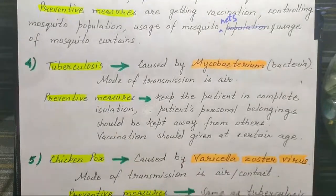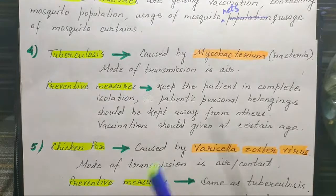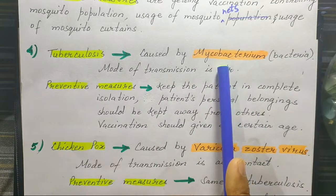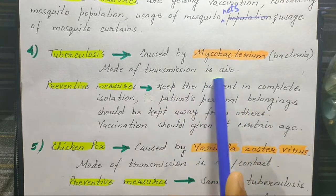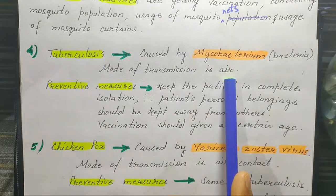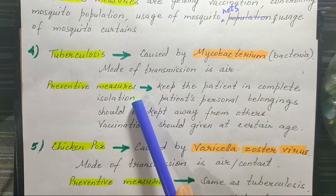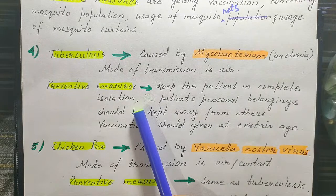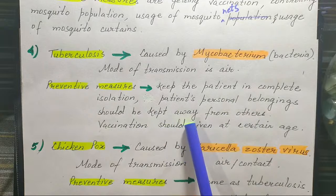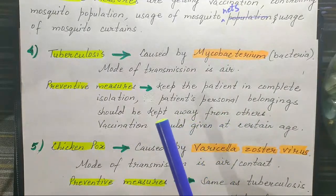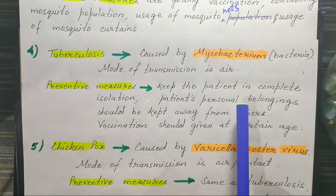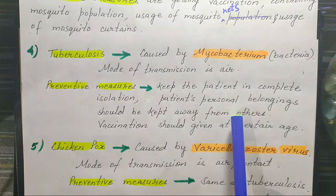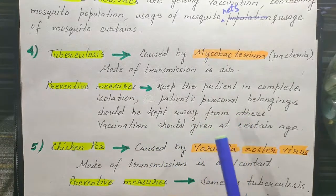Tuberculosis (TB) is a very common disease caused by a bacterium called Mycobacterium. It is transmitted through air. Preventive measures include keeping the patient in complete isolation, keeping the patient's personal belongings away from others, and providing vaccination at a certain age.